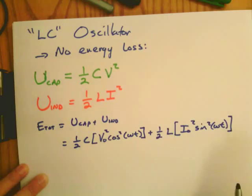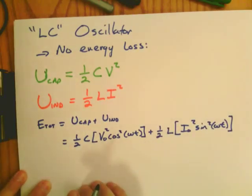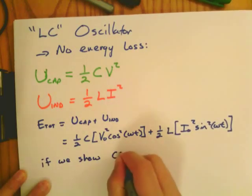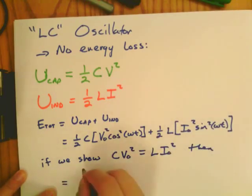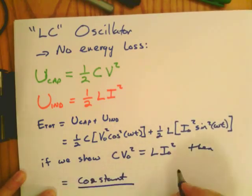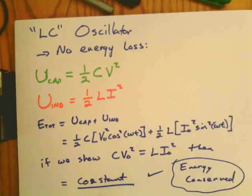And in the case that we choose, set up the system and calculate the values of I and V, if we can show that CV² is equal to LI² at time t equals 0, then we can show that this whole expression is equal to a constant. Because this cosine and the sine squared will add to 1.